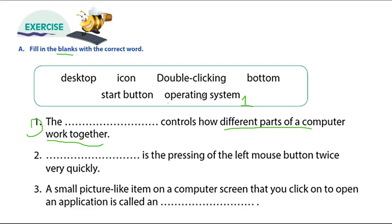Question two: this is the pressing of the left mouse button twice. When you press the left mouse button two times very quickly, we call it double-clicking. Question three: a small picture on the computer screen that you click on to open an application — what do we call it? A small icon. We call this an icon.